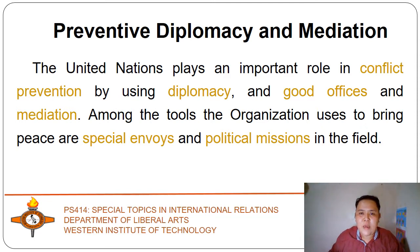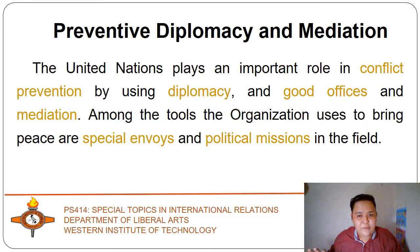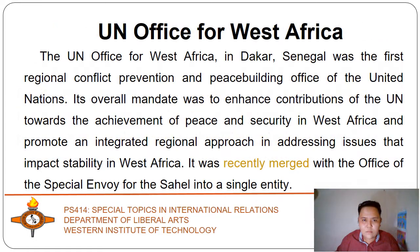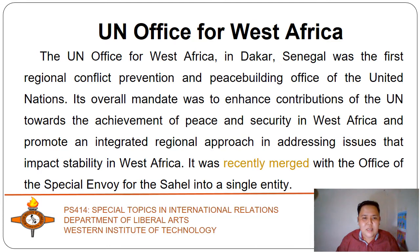The most effective way to diminish human suffering and the massive economic cost of conflicts and their aftermath is to prevent conflicts in the first place. The United Nations plays an important role in conflict prevention, using diplomacy, good offices, and mediation. Among the tools the organization uses are special envoys and political missions in the field. The UN Office of West Africa in Dakar, Senegal was the first regional conflict prevention and peace-building office of the United Nations. Its mandate was to enhance the UN's contributions to peace and security in West Africa. It was recently merged with the Office of the Special Envoy for the Sahel into a single entity.